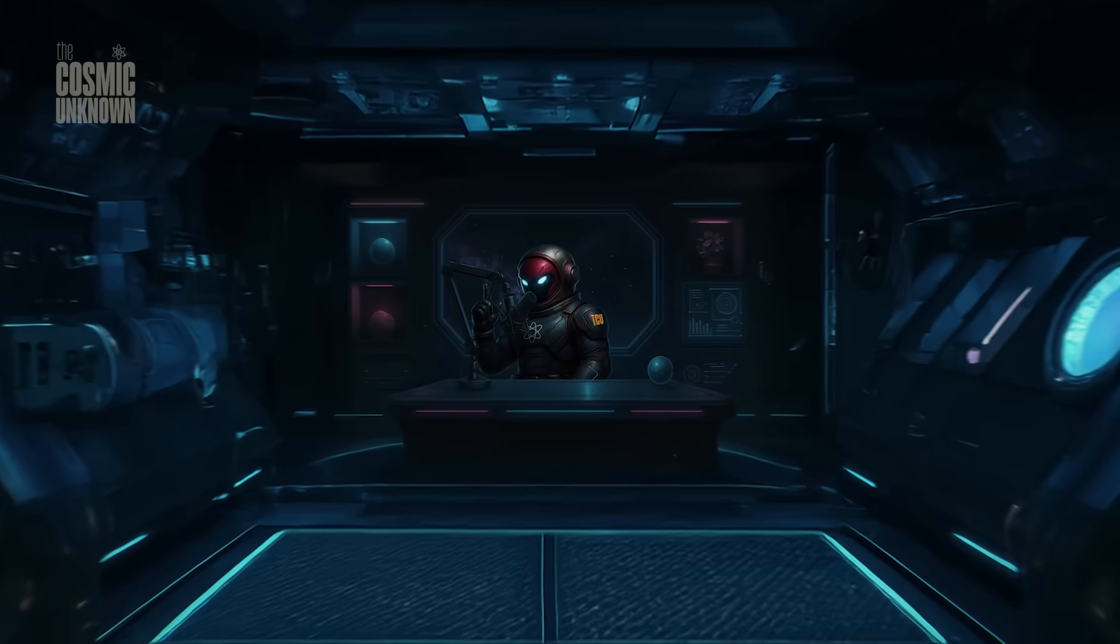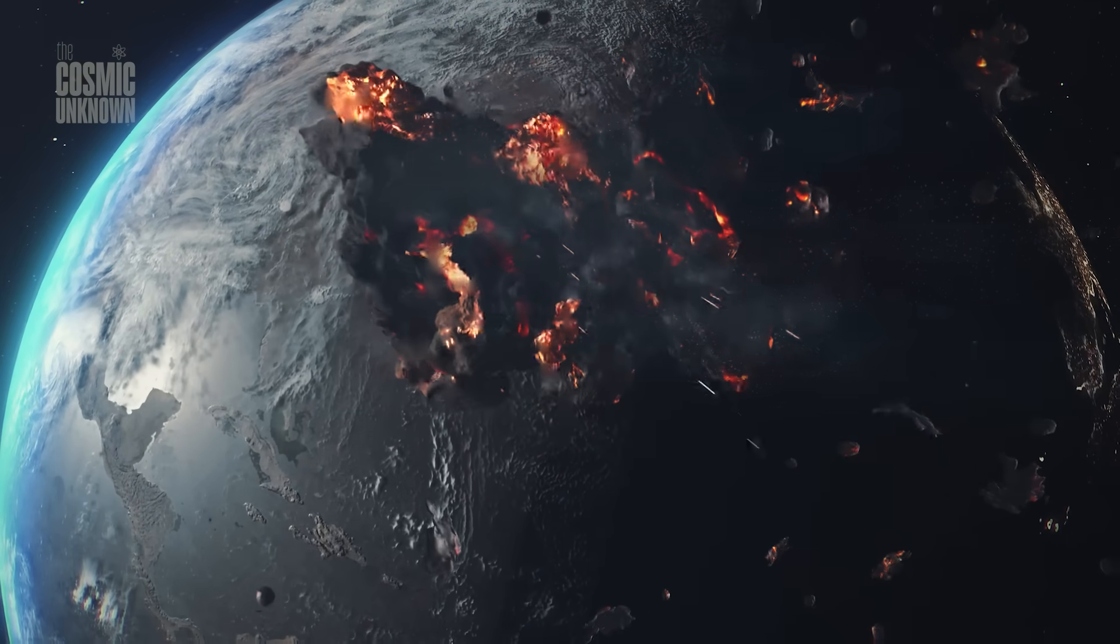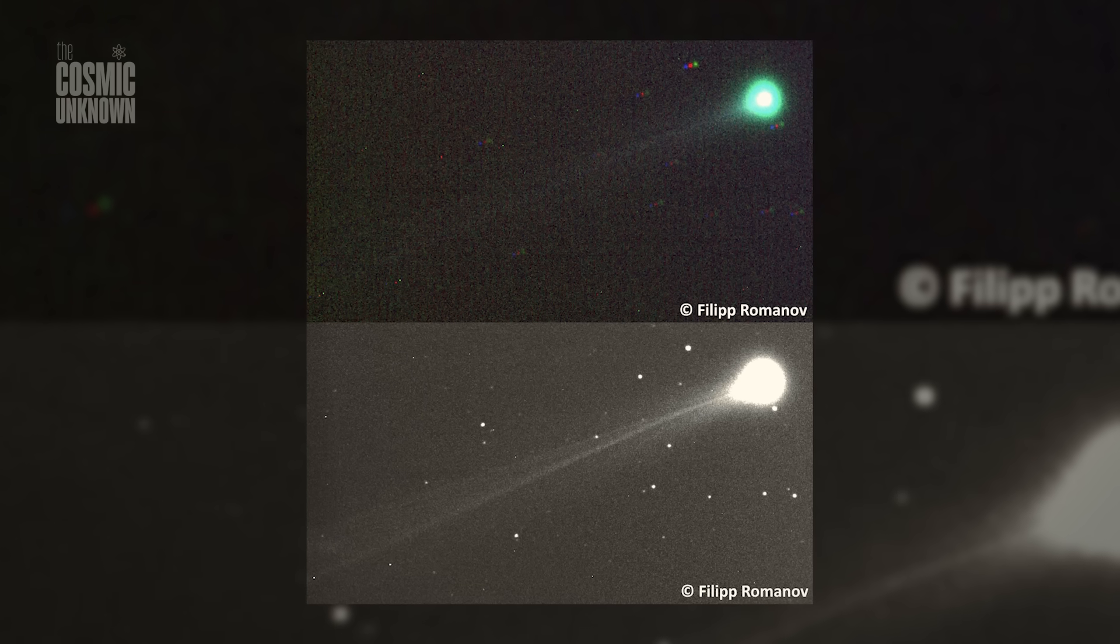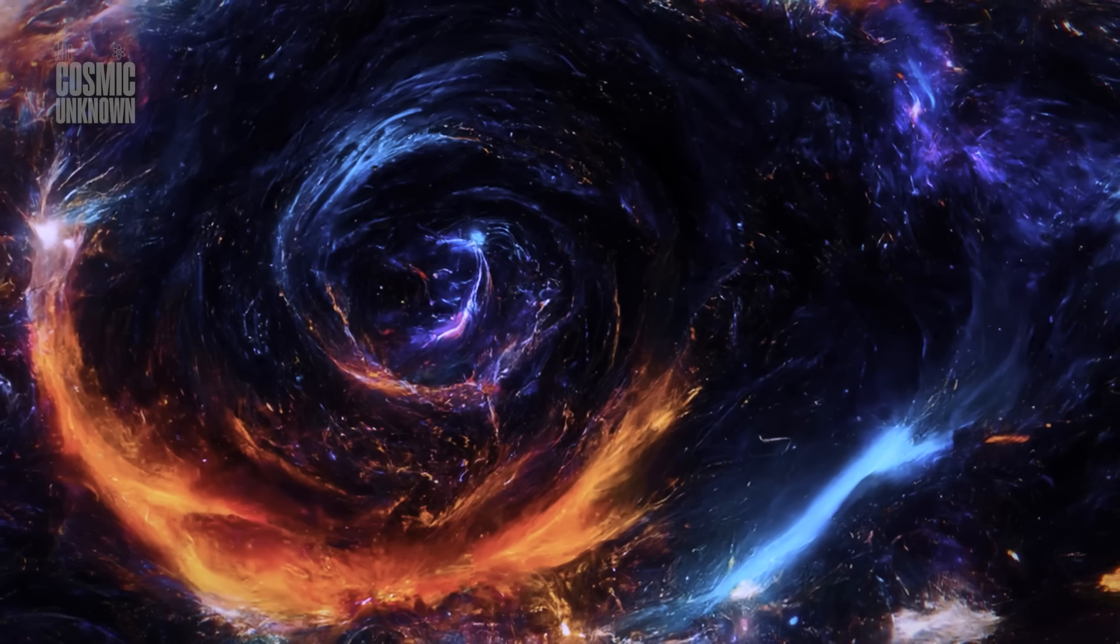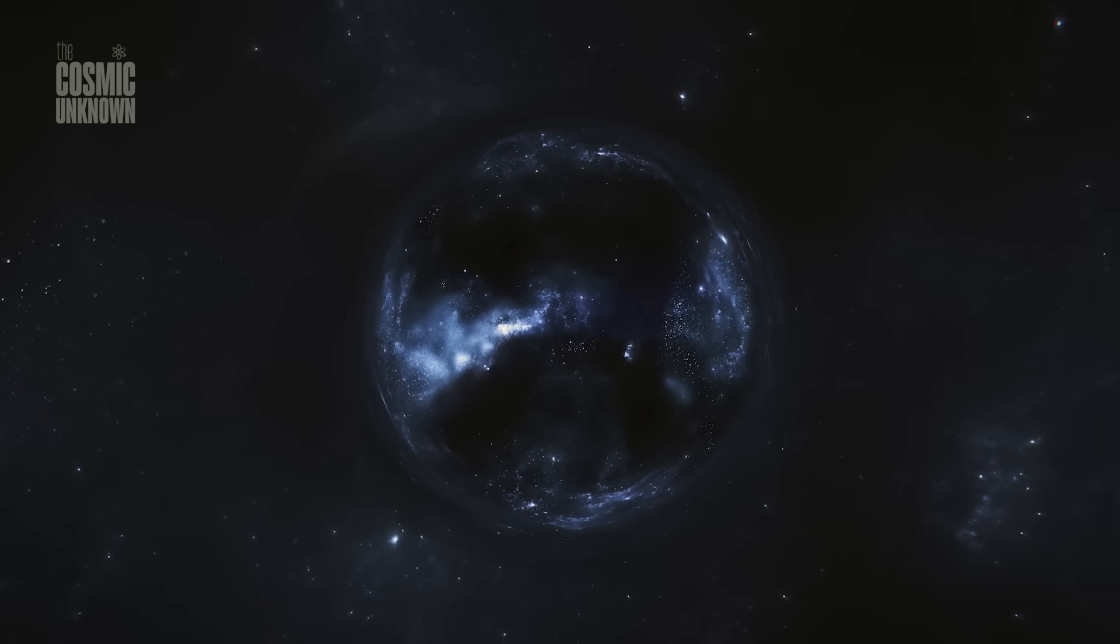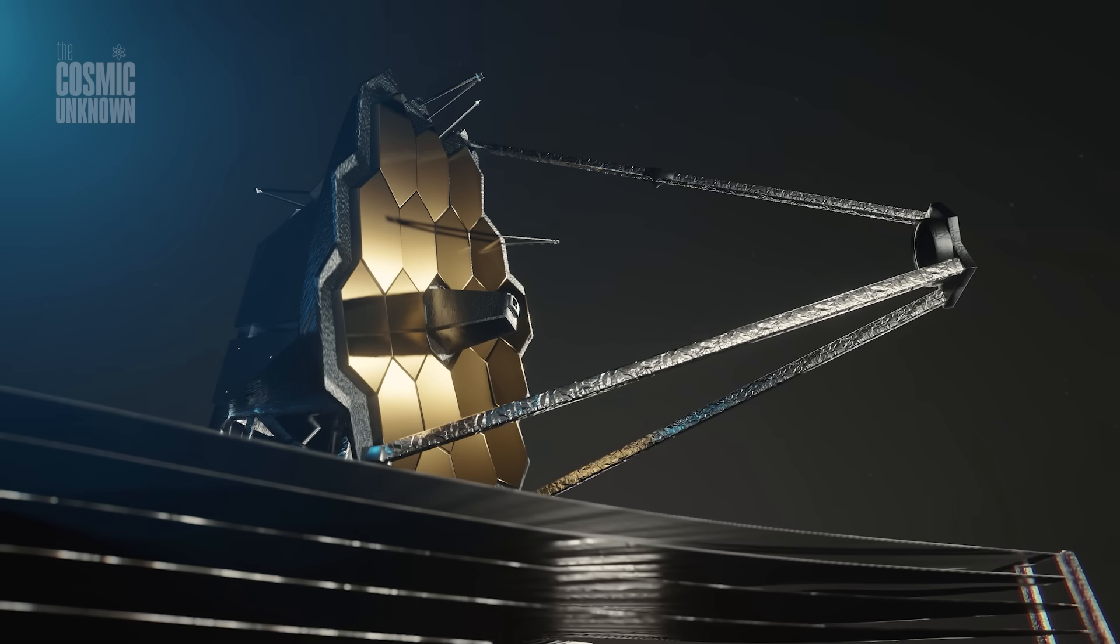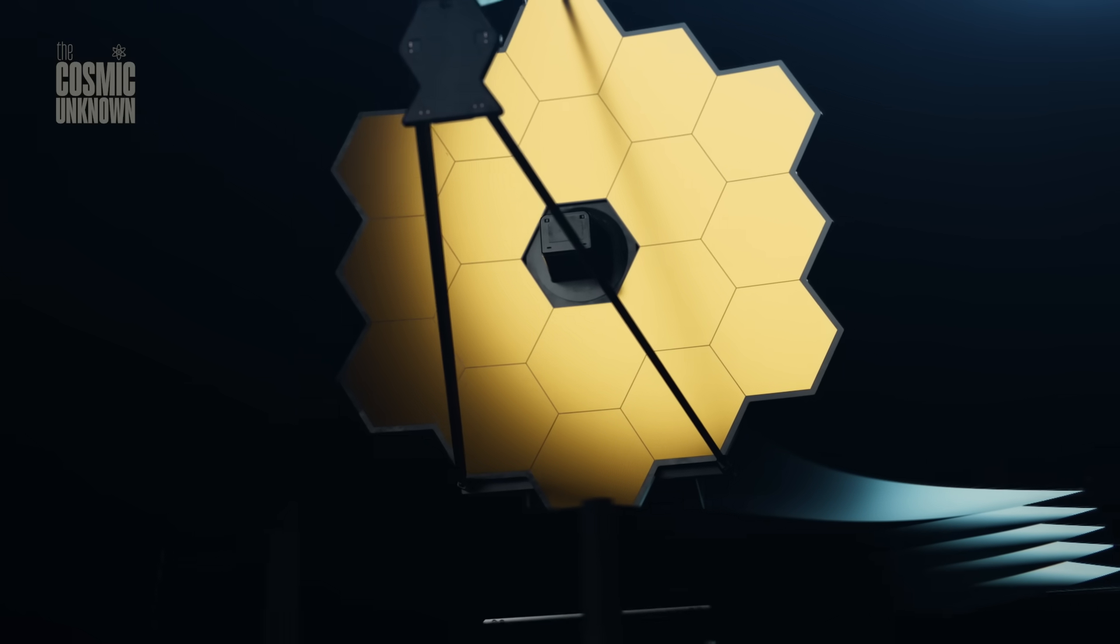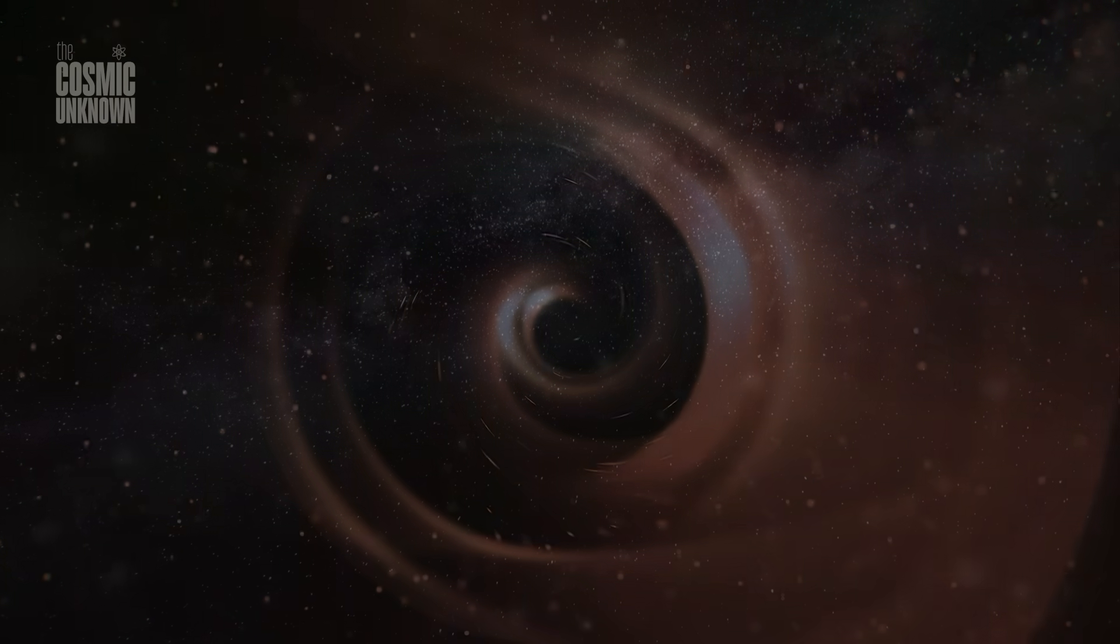Oumuamua emerged without warning. Borisov was spotted after it had already crossed into our system. 3i Atlas revealed itself late, when it was already deep within the inner solar system. Now, R2 SWAN joins that list, not as an interstellar outlier, but as another quiet arrival we nearly missed. It's easy to write this off as chance, as gaps in our detection systems. After all, the Holacek Gap, the region near the sun where our telescopes can't see, is a known limitation. Objects can hide there for weeks, maybe months. But what if it's not just chance? What if it's a pattern, not of identical objects, but of interruptions? Each of these visitors, interstellar or not, comes from the blind spot. Each forces us to reevaluate how much we actually see. Each leaves us wondering what else might be moving out there, just beyond reach.